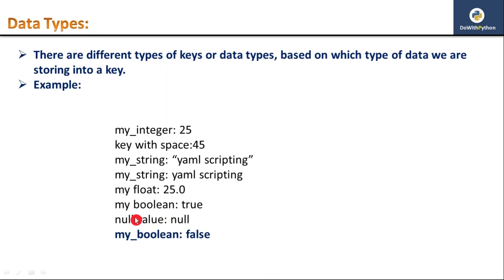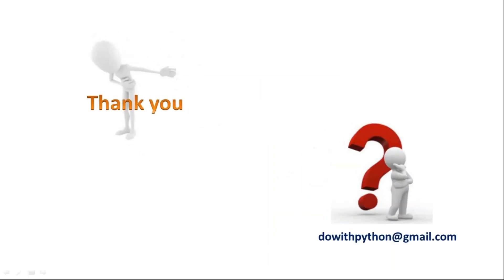Some null value if you want to represent - the entire null value, this word is a key and its value is null. my_boolean: false. So this is a key and this is a value. Okay guys, thank you for watching this video.